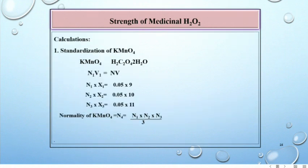Calculations: Standardization of permanganate against H2C2O4·2H2O: N1V1 equals N2V2, therefore N1 times X1 equals 0.05 times 9. Similarly do the calculation for N2 and N3. So finally, exact normality of permanganate equals N4 equals N1 times N2 times N3 divided by 3.